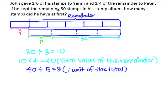So we want to find the number of stamps that John had at first. From the model, we can see that what John had at first is represented by 6 units. So we take 8 times 6, which gives us 48. Our answer is: John had 48 stamps at first.